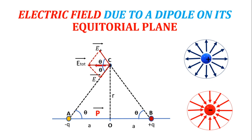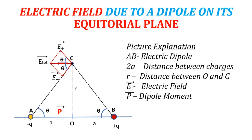Why do we need this parallelogram? We need this parallelogram to find the resultant of two vectors. We will construct a parallelogram and the diagonal of the parallelogram will be the resultant. The picture explanation is: AB is the electric dipole, 2A is distance between charges, R is distance between O and C, vector E is electric field, and vector P is dipole moment.